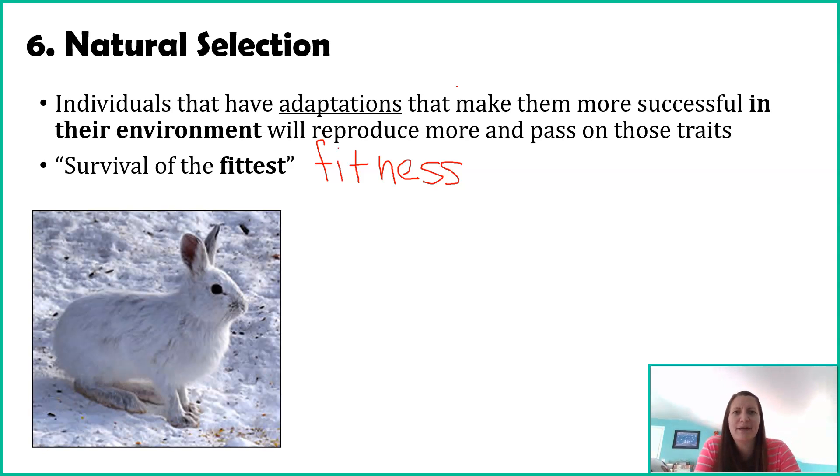We'll talk about some examples of adaptations. Here we have a snowshoe hare. This is found in Arctic areas. They have white fur. If there is variation in the fur color of hares, those that are a little bit browner, likely get predated upon more. They don't blend in as much. So the fittest, in this case, are just the ones that have whiter fur. They blend in more, meaning they won't get predated upon as much.